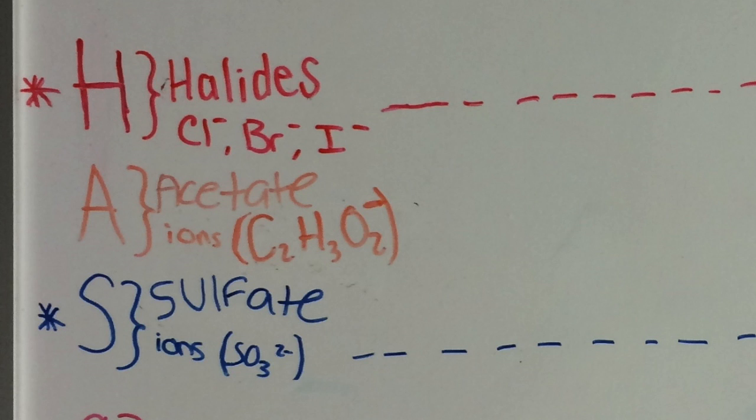Then comes has. The H are the halogens, such as Cl negative, Br negative, I negative. So those are the chloride, bromide, and iodide ions.